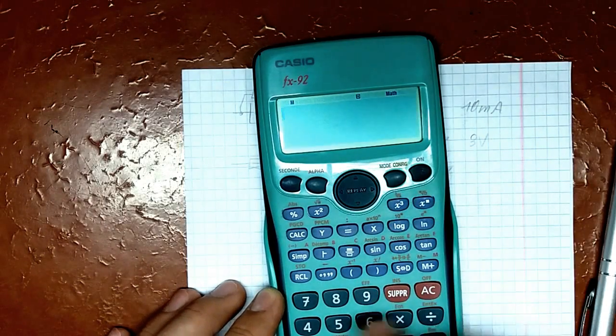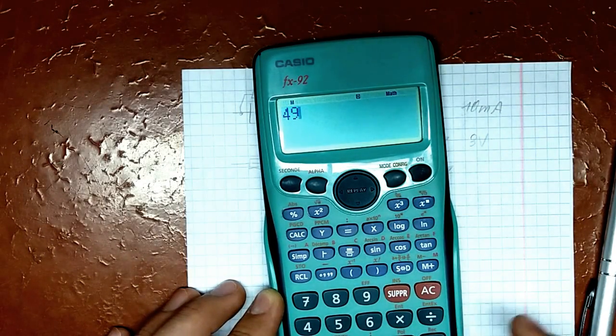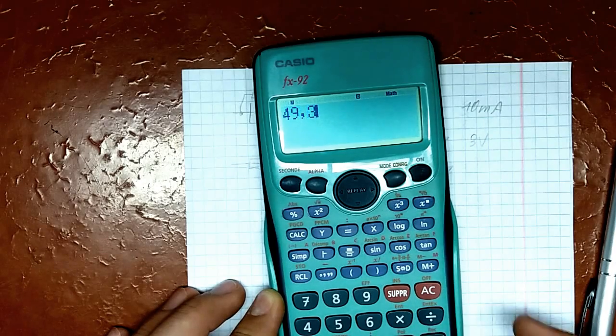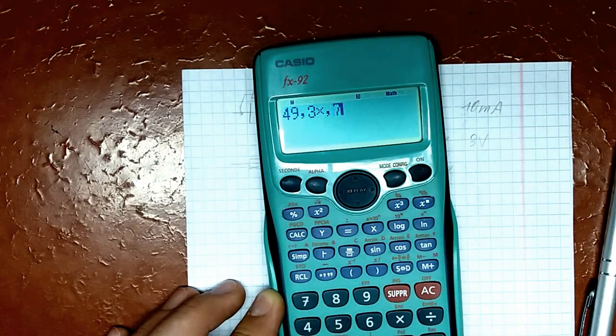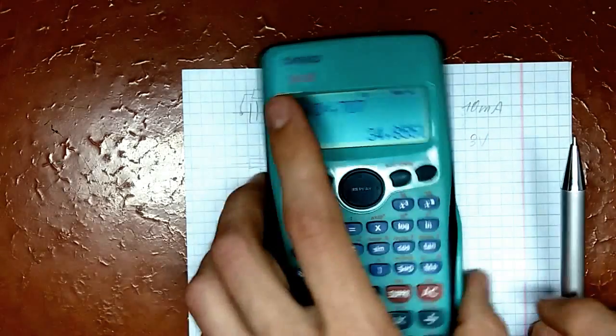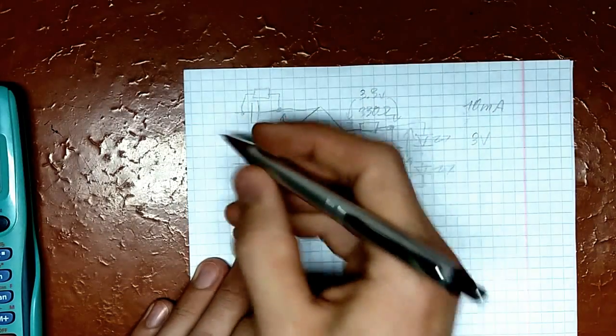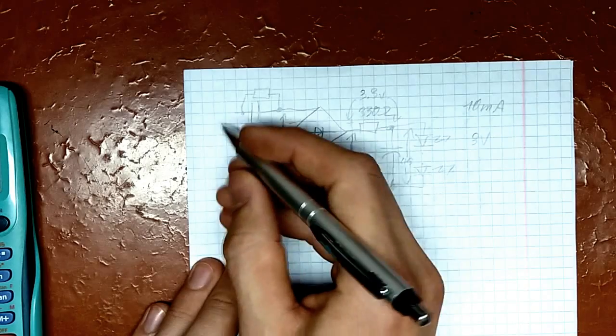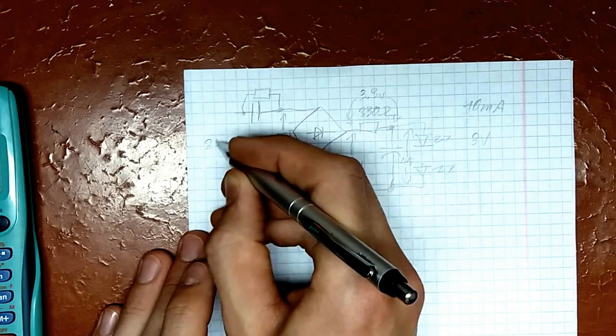So, what we need to do next. We take a calculator. That's the only thing we're gonna use in this calculation. 49.3 times 0.707 converted to RMS. Let's call this 35 volts. Next thing you do is you know your supply voltage. In my case, let's say 240 volts.